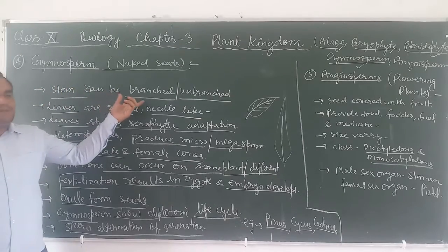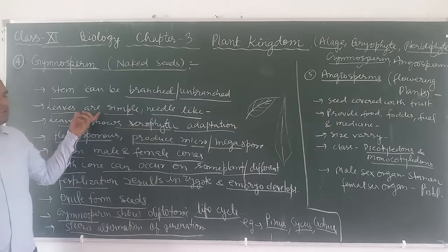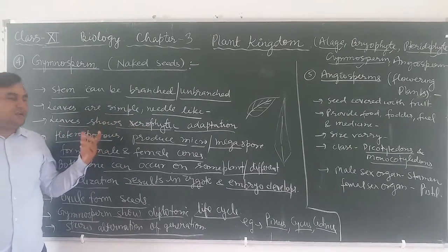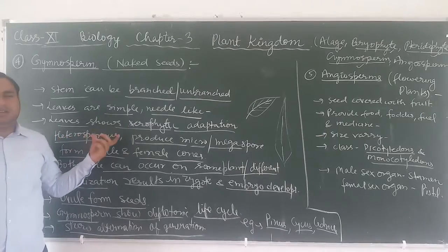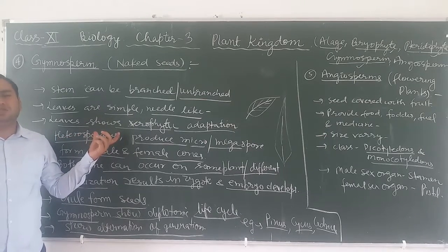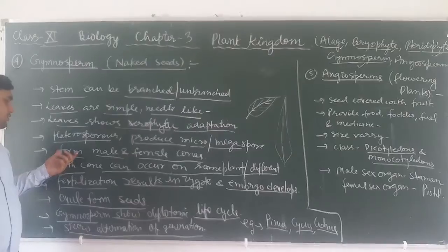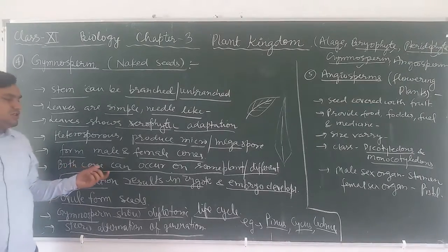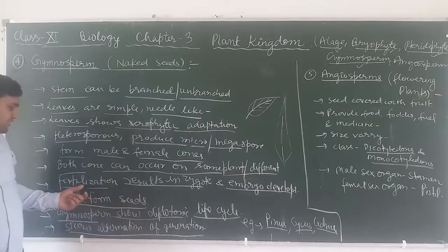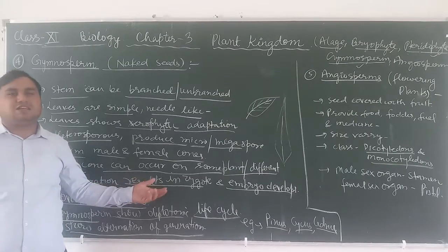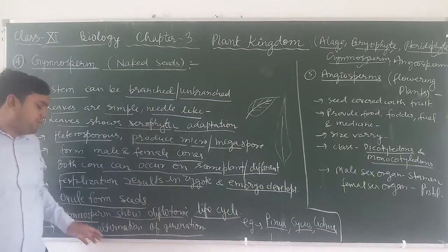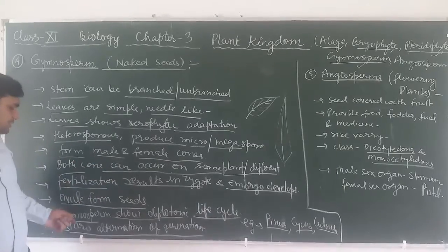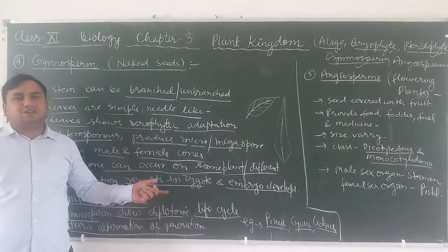The gymnosperm stem can be branched or unbranched. Leaves are simple or needle-like structures and show xerophytic adaptation. They are heterosporous, producing both megaspores and microspores, forming male and female cones. Both cones can occur on the same or different plants. Fertilization results in zygote formation and embryo development, and the ovule forms seeds. Gymnosperms show the diplontic life cycle.